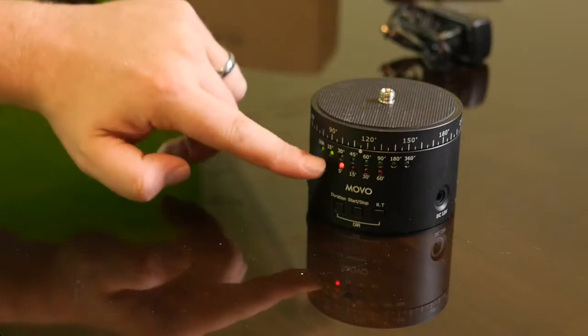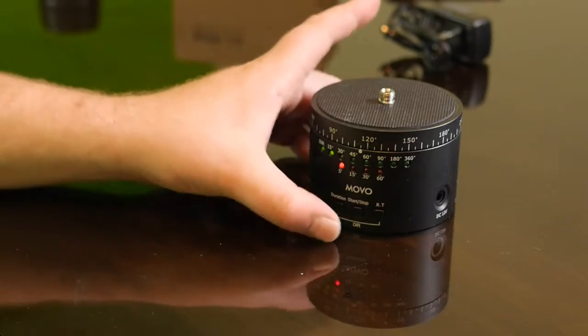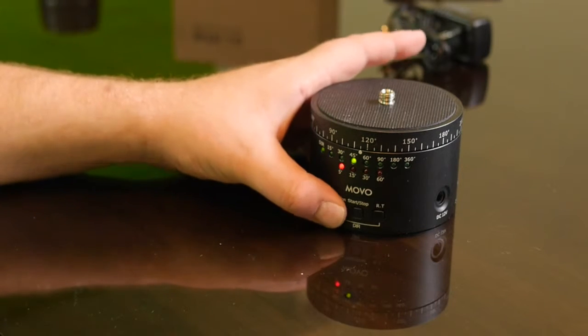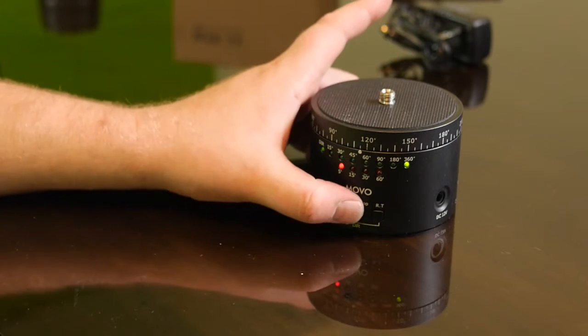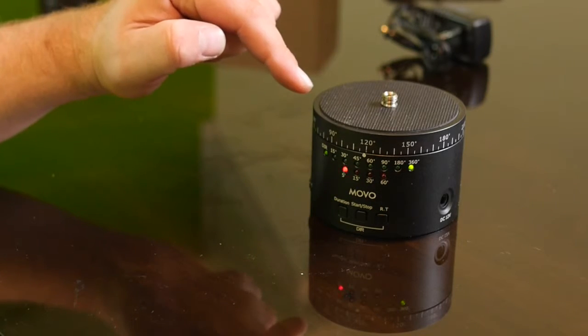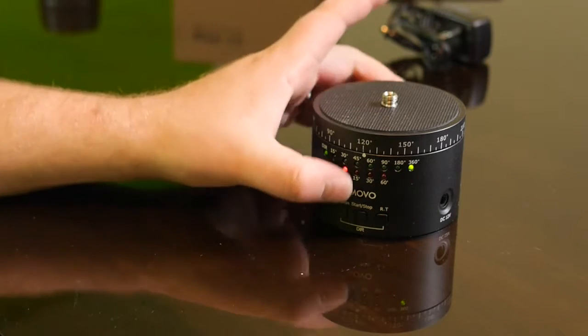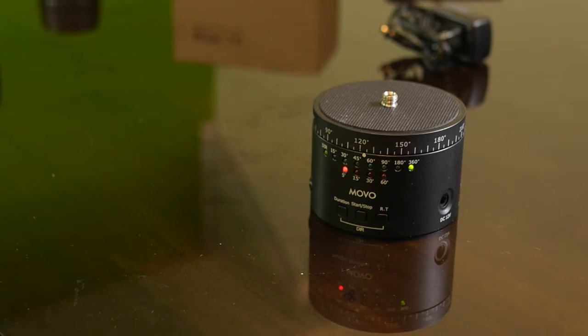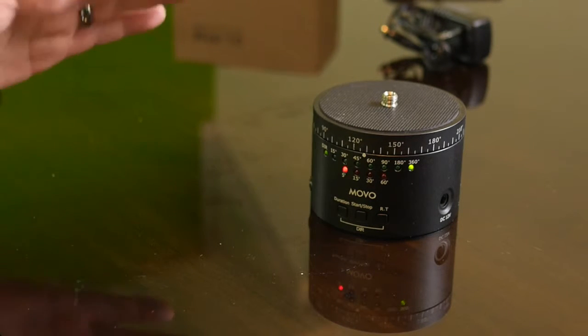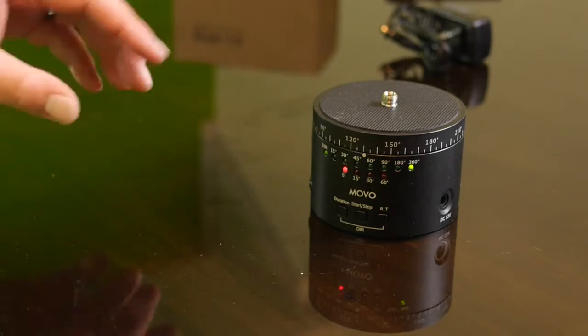But to show you how smooth this moves, I'm going to go ahead and do the five minute setting, 360. So that way you can see it actually start moving. So I'll hit go there and instantly you can see it. And now I could stop it at 120 if I wanted to get all crazy with the timer and things like that. So you can see it's going around there.